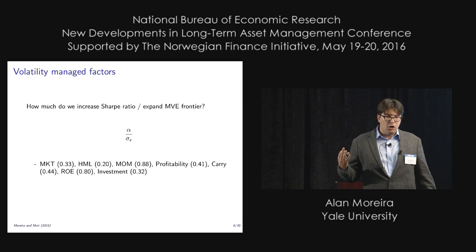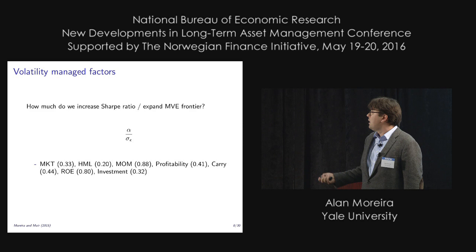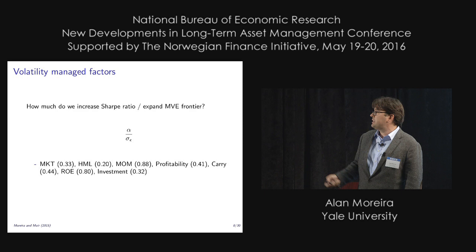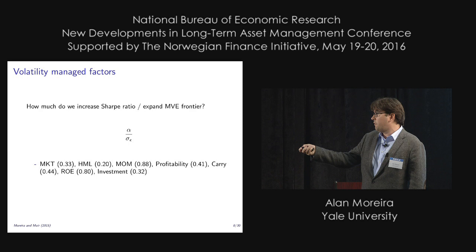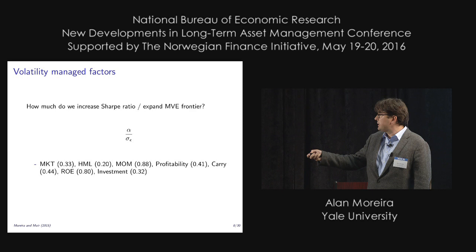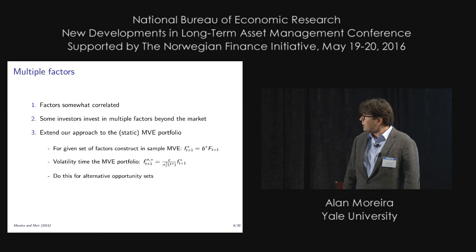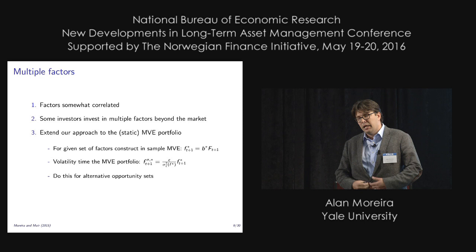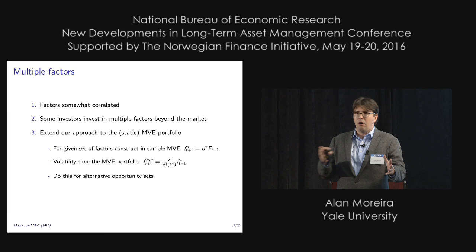The economic meaning: from the perspective of an individual portfolio, you can basically increase your Sharpe ratio — it's the alpha divided by the residual risk. These are fairly big numbers; for the market it's 0.33 relative to a Sharpe ratio of 0.42 in the sample. For momentum it's really, really big. By and large, very large appraisal ratios. But you might think we live in a multi-factor world. We know CAPM does not work, and while some investors can only invest in the market, others have access to other factors. So what's the right thing to do?